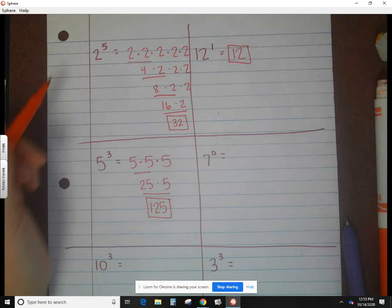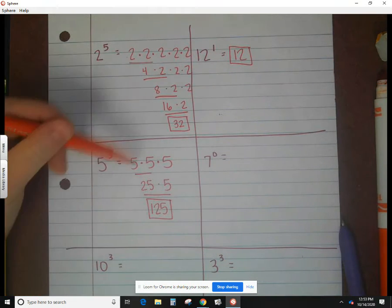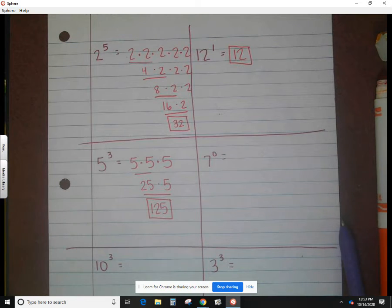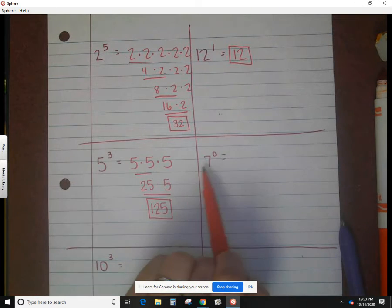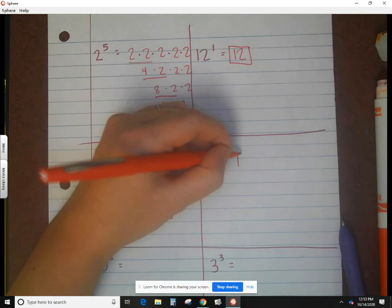I want you to look - we didn't do two times five. We didn't do five times three. That's not how this works, so make sure you're following the directions. Now here we have a special case. Remember in our notes, any number to the zero power always gives us one.